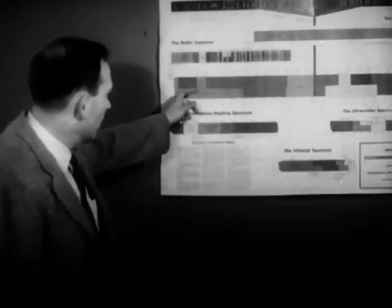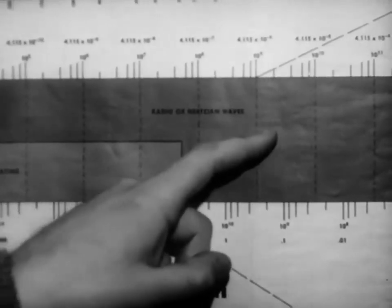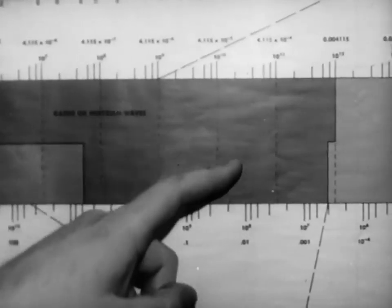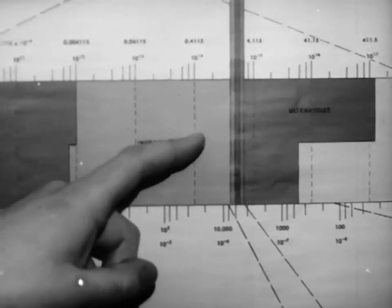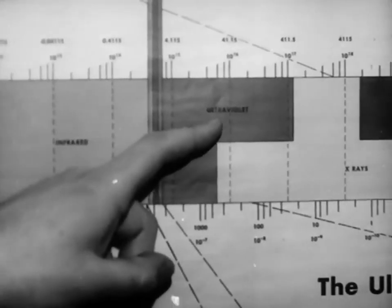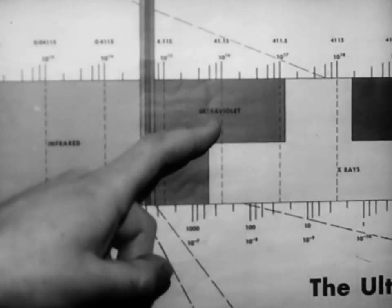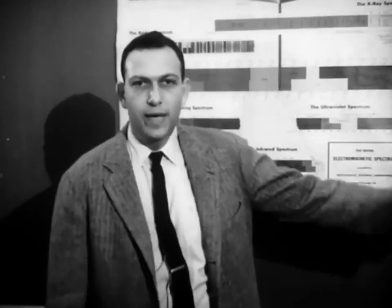We frequently indicate these waves pictorially. Notice the range of wavelengths: radio waves, about a meter; microwaves, a hundredth of a meter; infrared, about 10 to the minus 5 meters; visible light, 5 times 10 to the minus 7 meters; ultraviolet, about 5 times 10 to the minus 8 meters; X-rays, 10 to the minus 10 meters. You have just seen the enormous range in frequency, or wavelength, over what we call the electromagnetic spectrum.